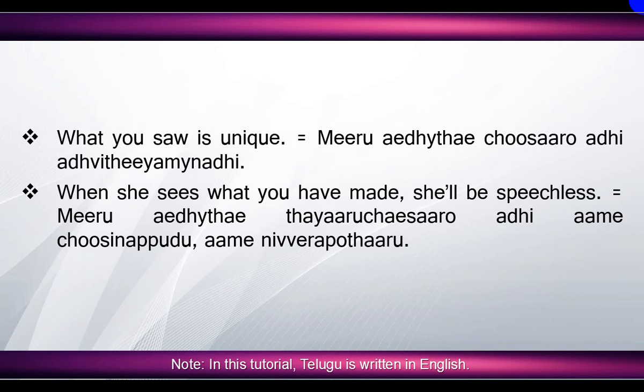'What you saw is unique' means 'meeru edaite tu-saro, adi adhvitiyam aynadi'. Here, 'what you saw' means 'meeru edaite tu-saro'. 'What' means 'edhi', 'you' means 'meeru', 'saw' means 'tu-saro', but when you mix these three words you say 'meeru edaite tu-saro'. Here we don't take the meaning of 'is', but take the meaning of 'that', which means 'adhi'. 'Unique' means 'adhvitiyam aynadi'.